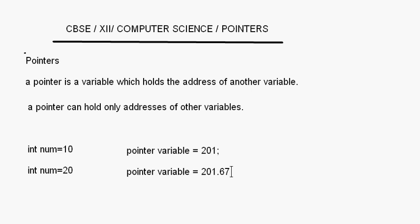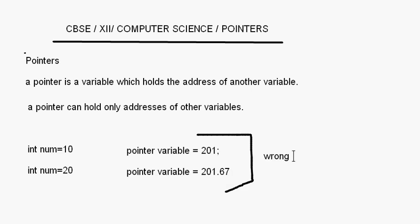Both these are wrong. The pointer variables can have only addresses of other variables. So inside this pointer variable, I can store the address of another variable — that is fine.